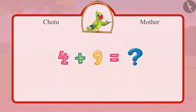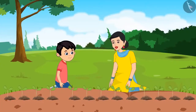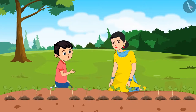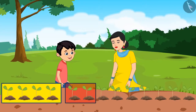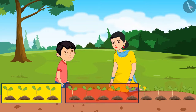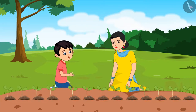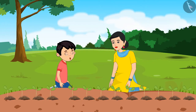Let us see. Chotu, can you count and tell me how many saplings we have planted? Chotu counted: 4, 4, 5, 6, 7, 8, 9, 10, 11, 12. Mom, we have planted 12 saplings in total. Children, has Chotu counted correctly?